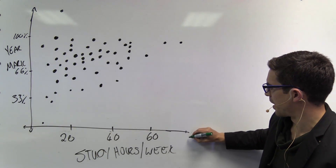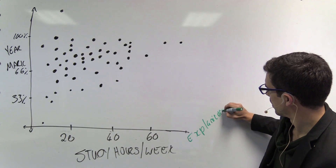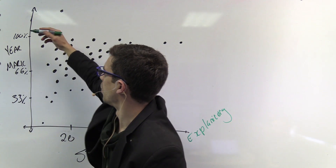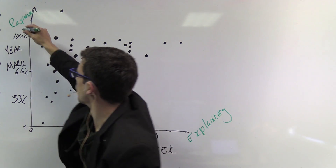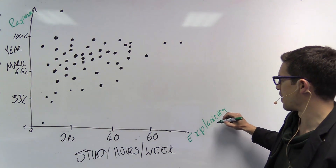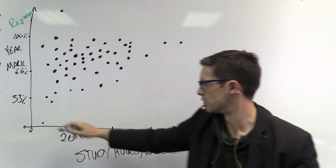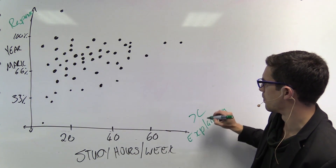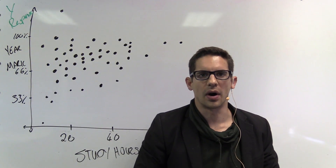So in this case, the study hours per week is our explanatory variable, because that explains what we see in our y variable. The final year mark is our response variable, because it responds to what's happening with our explanatory variable. The explanatory variable explains what we see in the response variable, and we put the explanatory variable on the x-axis and the response variable on the y-axis.